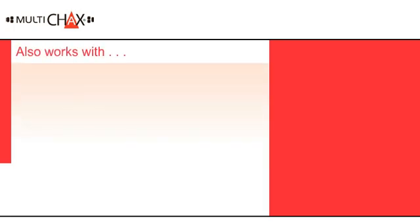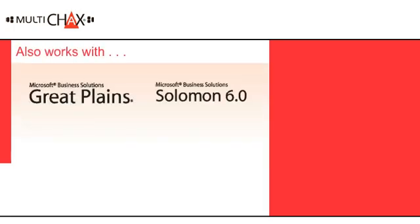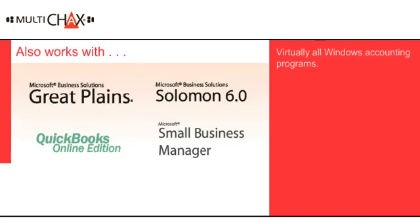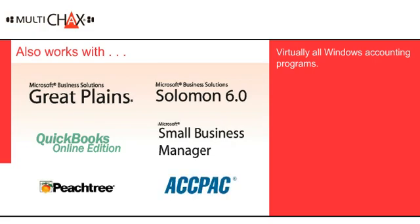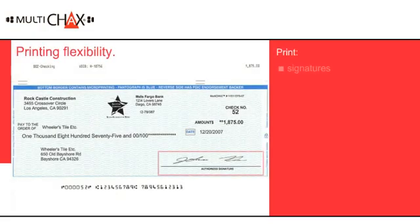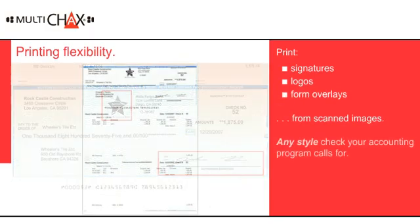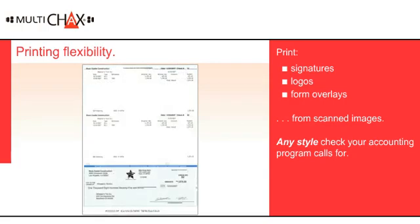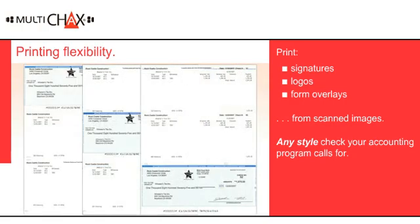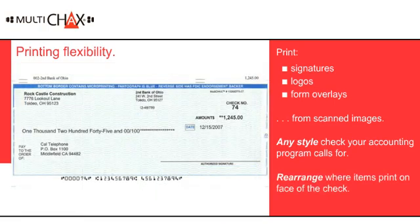MultiChecks also works with Great Plains, Salomon, QuickBooks Online, and virtually all other Windows accounting programs. Our solution will print signatures, logos, and form overlays from your scanned images. No matter what style check your accounting program calls for, with MultiChecks you can select check output styles with the click of a mouse, and you can rearrange where items print on the face of the check.